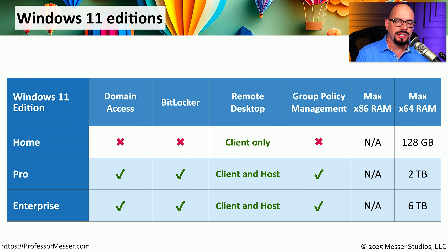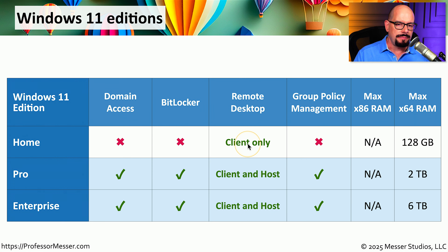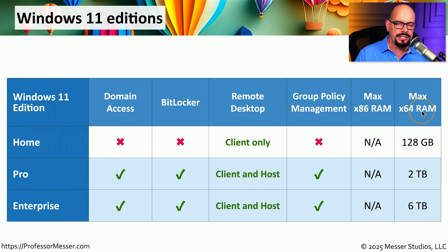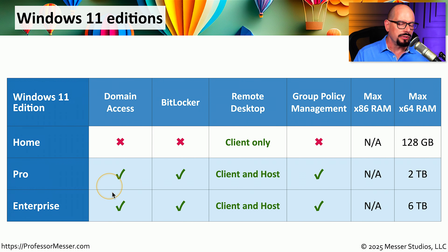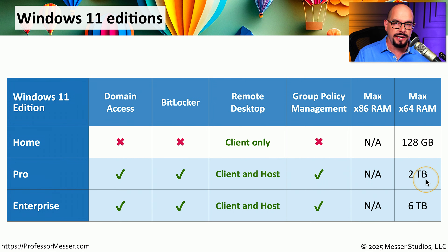This table of features for Windows 11 is very similar to the one for Windows 10. Windows 11 Home does not have domain access, no BitLocker functionality, can only use remote desktop as a client, and has no group policy management. There is no 32-bit version of Windows 11 — only 64-bit CPUs are supported. Windows 11 Home supports 128GB of memory, Windows 11 Pro and Enterprise support domain access, BitLocker, remote desktop as both client and host, and group policy management. Windows 11 Pro supports a maximum of 2TB of RAM, and Windows 11 Enterprise supports 6TB.